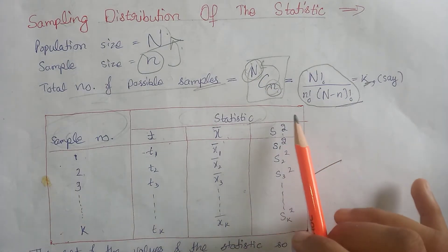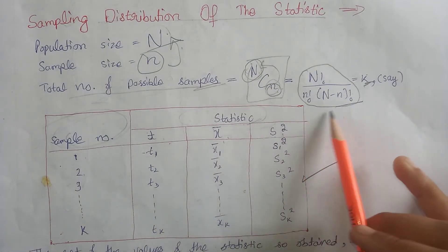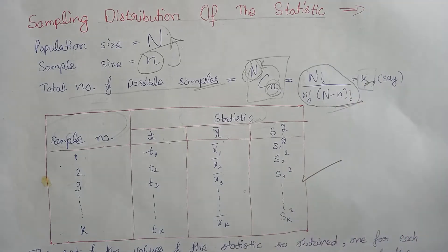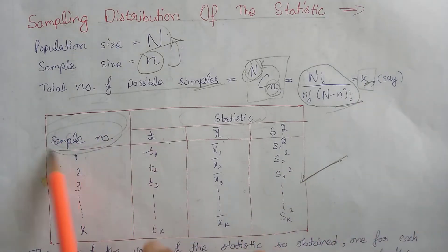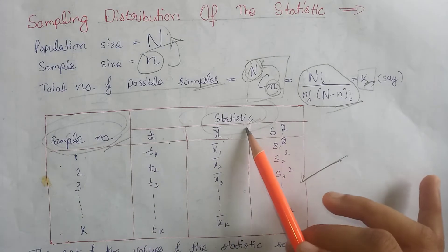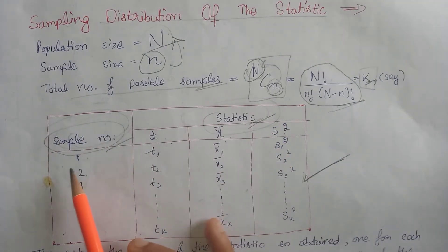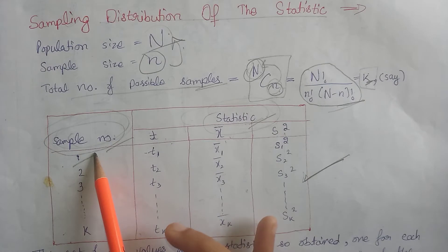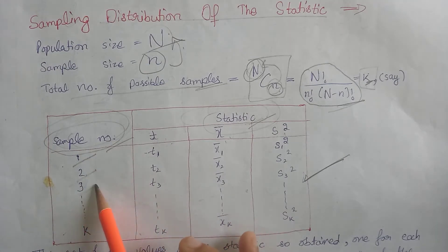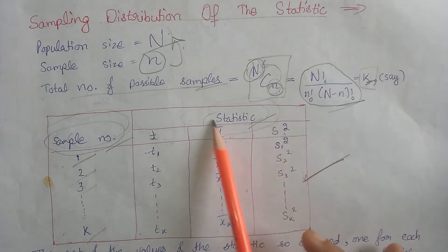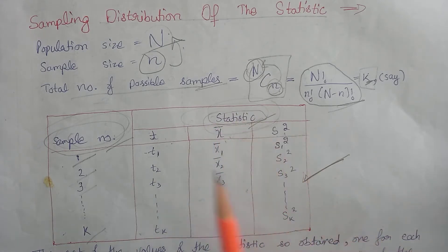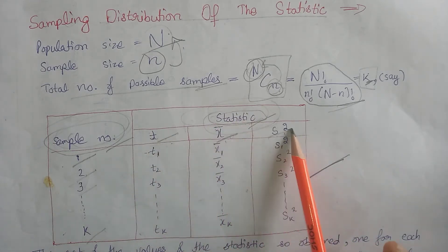Let's suppose the value of this calculation is k. We make a table with two columns: the first is the sample number and the second is the statistics of these various samples. The first sample is denoted as the first, the second sample as the second, the third sample as the third, and so on up to the kth sample.